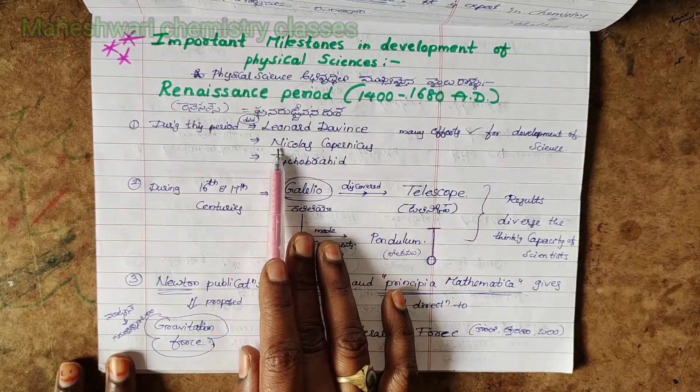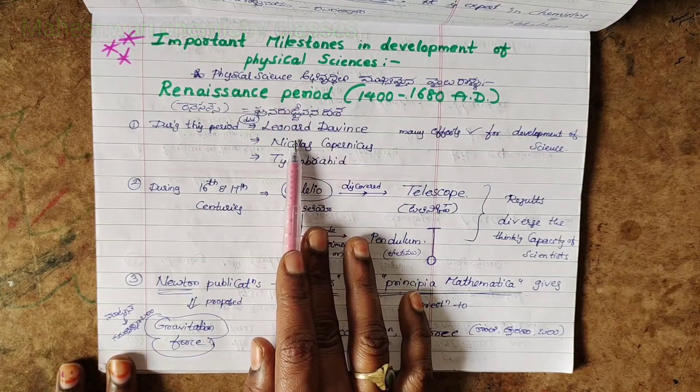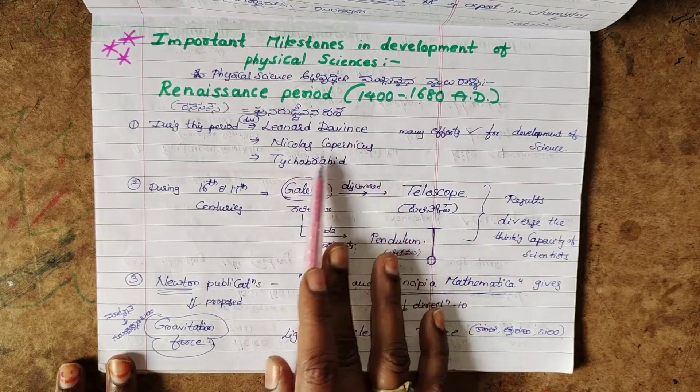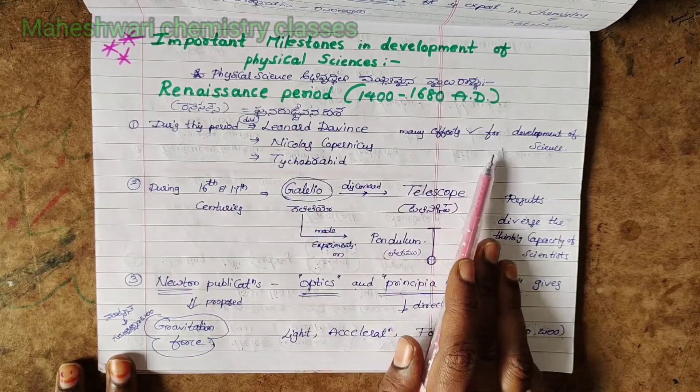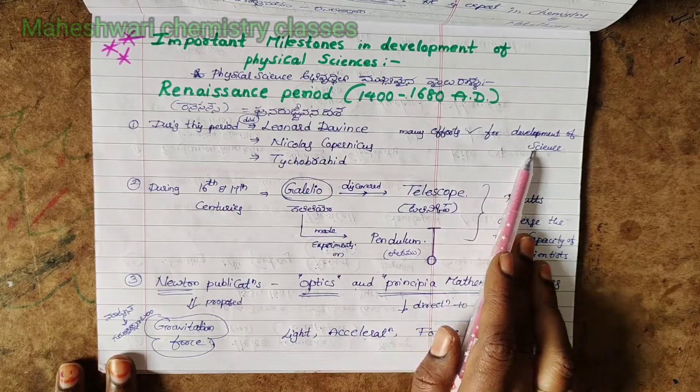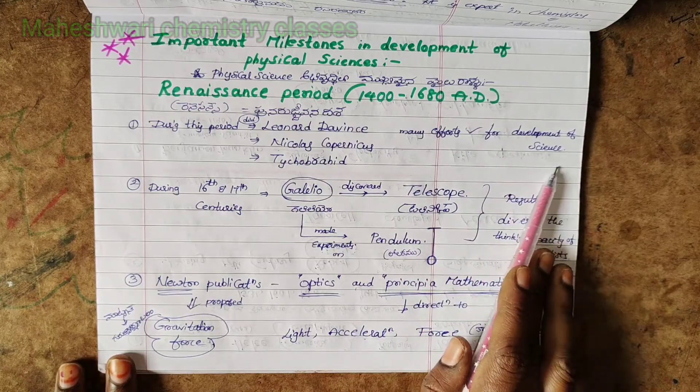During this period, Leonardo Da Vinci, Nicholas Copernicus, and Tycho Brahe did many experiments for the development of science.